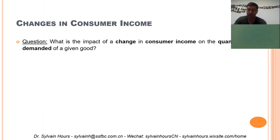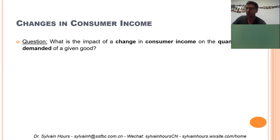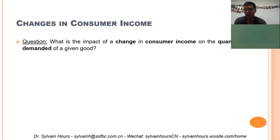The answer depends on what type of good we are dealing with. If we are dealing with a normal good, then an increase in income will lead to an increase in purchasing power and therefore an increase in quantity demanded. If there is a decrease in income, the quantity demanded of a normal good will decrease. There is a positive relationship between income and quantity demanded of a normal good — they move in the same direction. But if we have an inferior good, it's a negative relationship between income and quantity demanded.